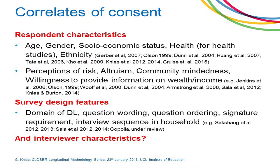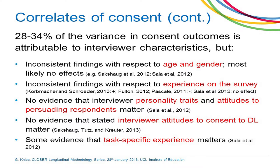When we look at studies from Germany, the UK, and America, we find that typically 28 to 34% of the variation in consent is attributable to interviewer characteristics. But what those characteristics are is again inconsistent — age and gender didn't really matter; experience on surveys was sometimes positively and sometimes negatively related to consent; personality traits and attitudes to gaining cooperation at the doorstep didn't matter for consent outcomes. One German study even asked interviewers whether they themselves would consent to data linkage, and that didn't seem to matter either.